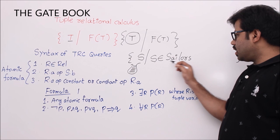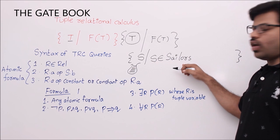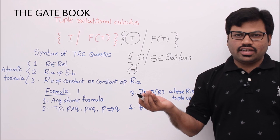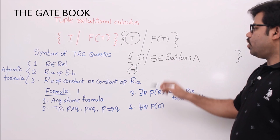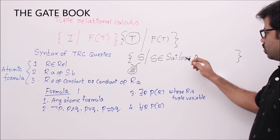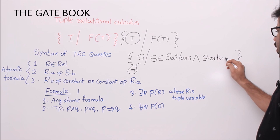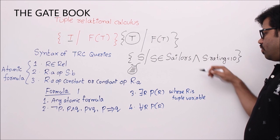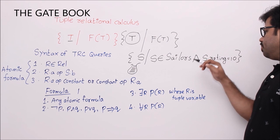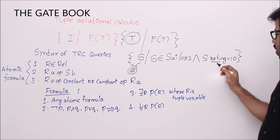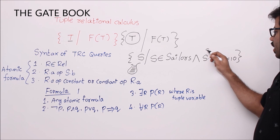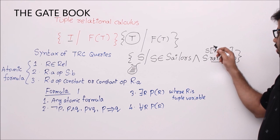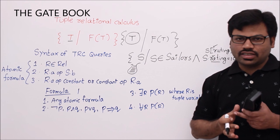Whenever a tuple belongs to sailors, then we take it — we are forming a collection of tuples. Whenever a tuple satisfies this formula, we take it. So whenever S belongs to sailors, you are taking all the sailors. Similarly, if I write another condition: collect all tuples S where that tuple belongs to sailors and its rating S.rating equals 10. In some other textbooks, they use the syntax S(rating) — both are the same. This is a rough idea about tuple relational calculus formulas.